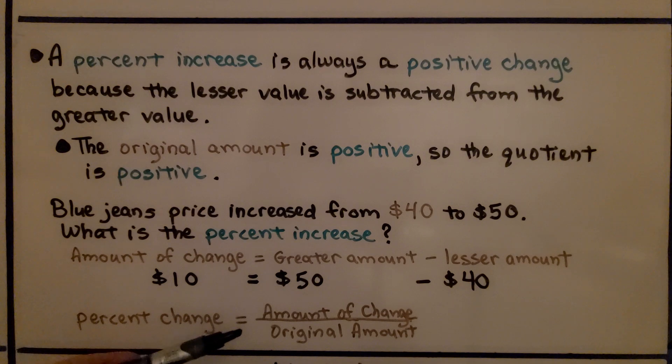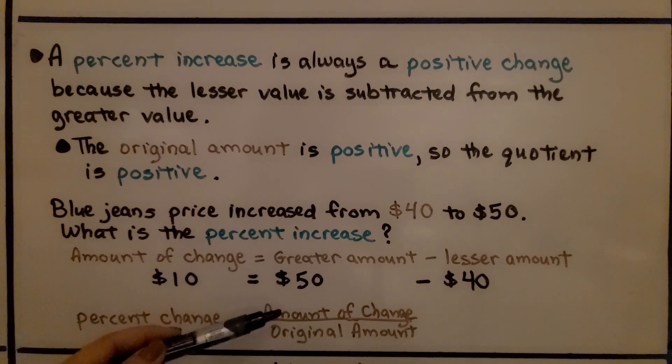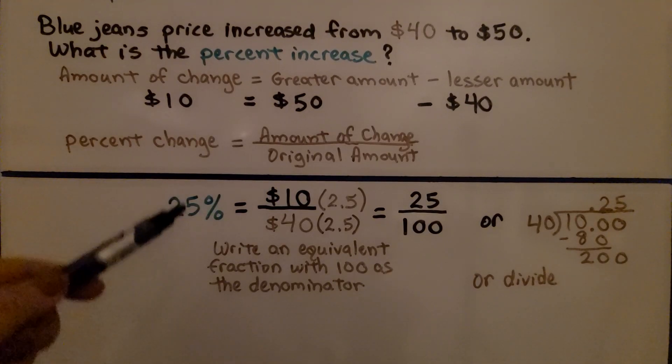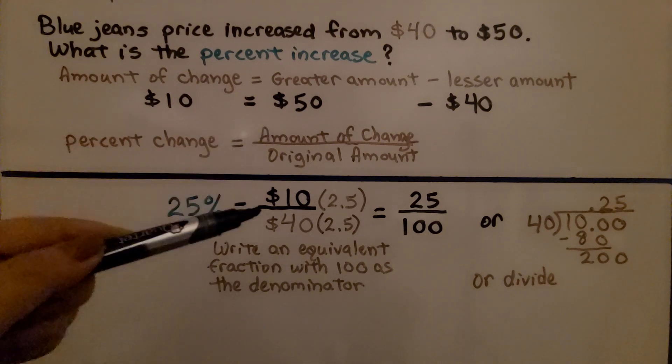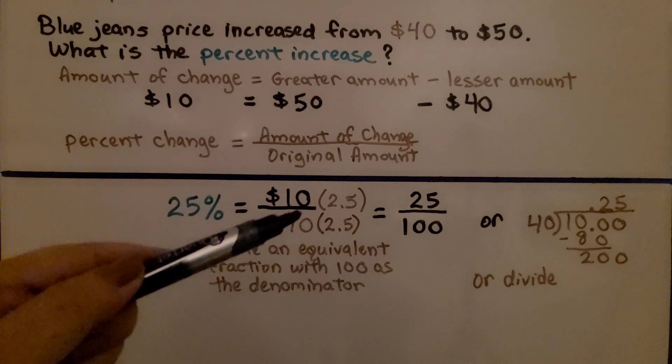And the percent change is equal to the amount of change divided by the original amount. So we're going to have the amount of change, $10, divided by the original amount, $40. The percent change, that's going to be 25%, is equal to the amount of change, the $10, divided by the original amount, $40.